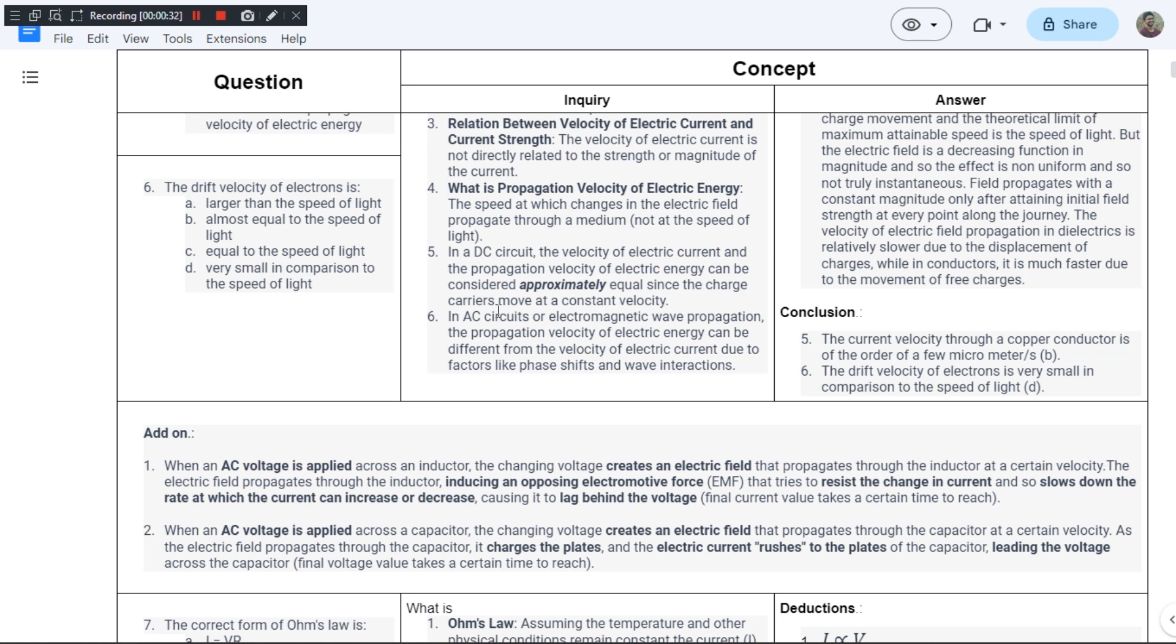That is the basic definition of drift velocity. Here option A says larger than the speed of light. Option A can be straight away ruled off because nothing in this world can travel at a speed larger than the speed of light. Speed of light is the ultimate limit of the speed with which any physical body can travel.